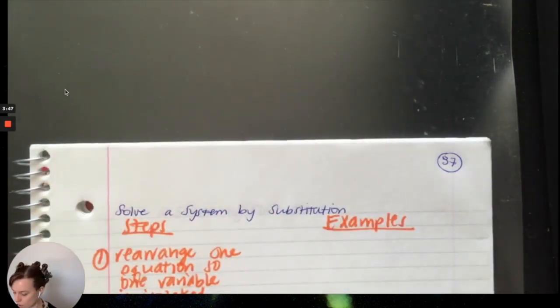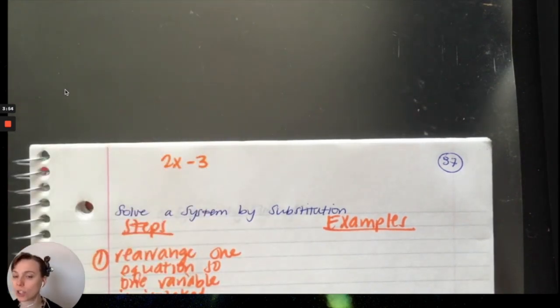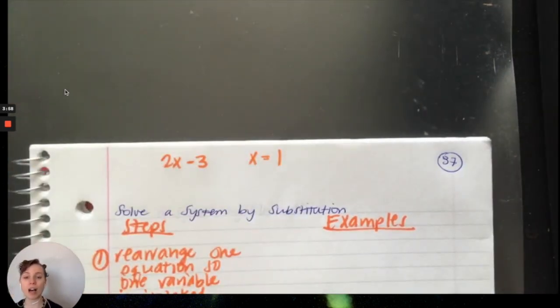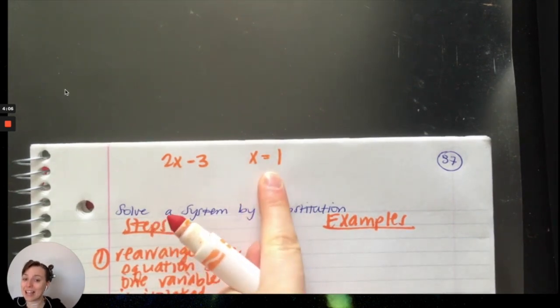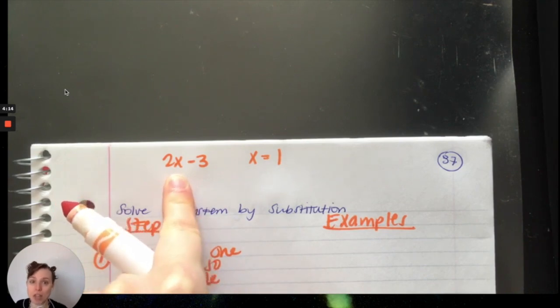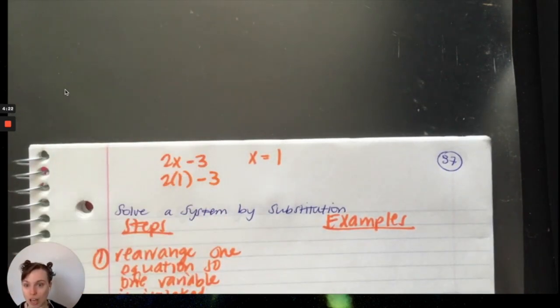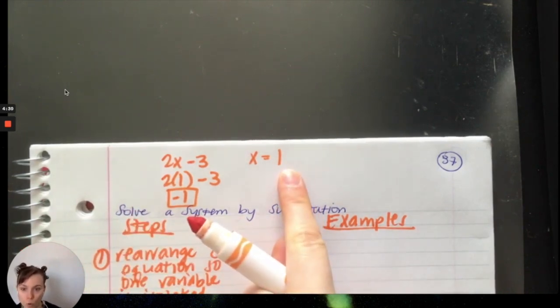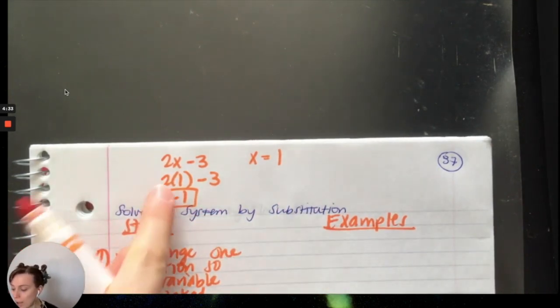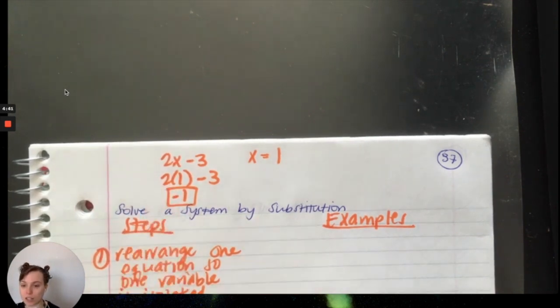In the margin up at the top, I do want to just do a random example that if I have 2X minus 3, this is an expression. But if I say X equals 1, can you evaluate this expression? I'm going to substitute X is equal to 1. They are the exact same thing. So I'm going to substitute this X for 1 because they are the exact same thing. I end up with negative 1 as my solution. That's what we're doing is substitution. Make sure you're using parentheses because the distribution of a negative is going to throw you sometimes.